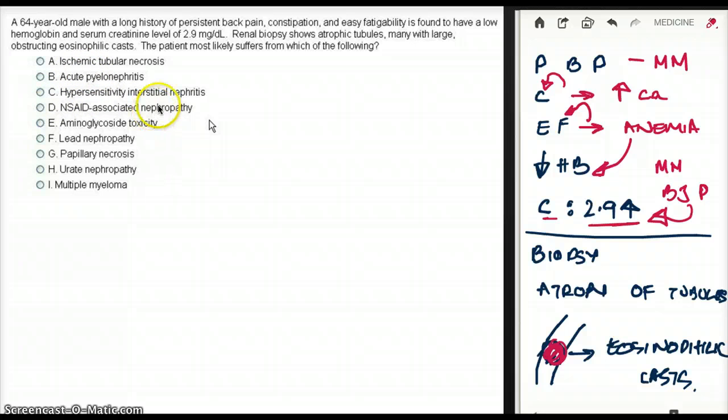Choice C, hypersensitivity interstitial nephritis. These are the choices, and NSAID-associated nephropathy. These are C and D. I mean, you come across this before multiple myeloma, and you might want to jump to these options. But you do have to take into account persistent back pain, constipation, anemia, creatinine increased, all these things, right?